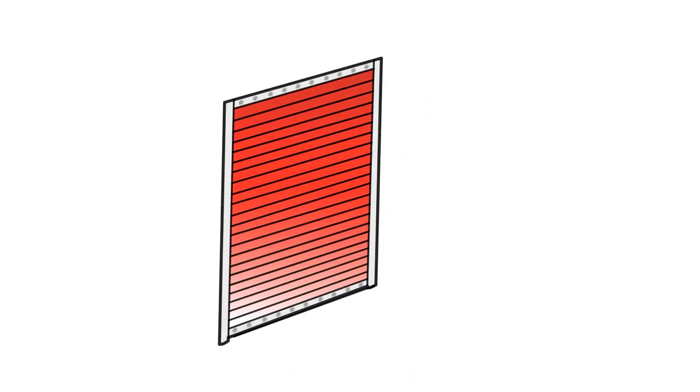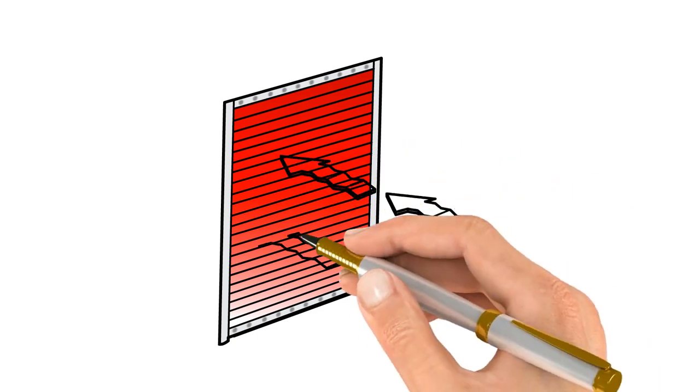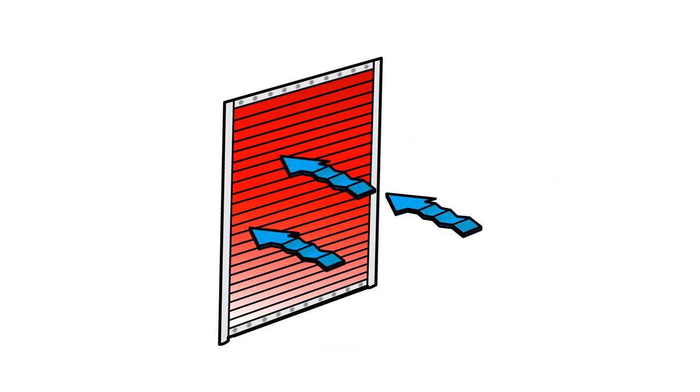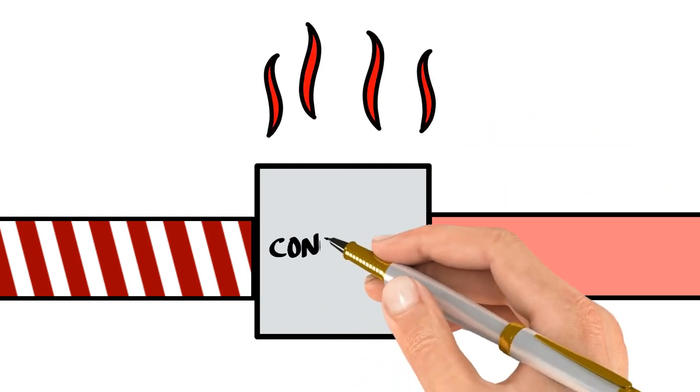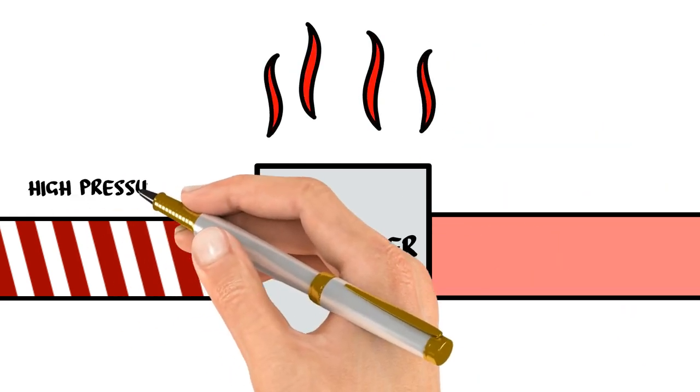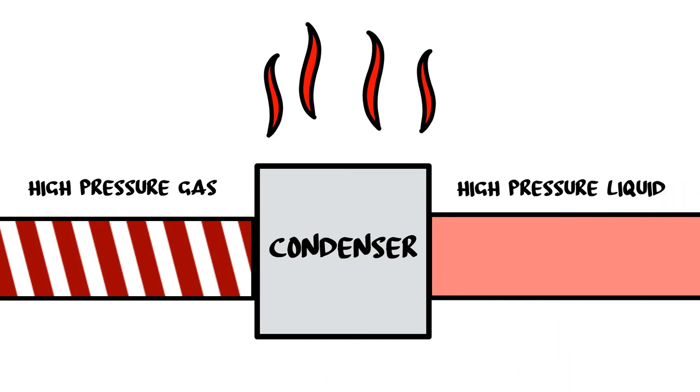In front of the radiator now, you're going to get airflow through that heat exchanger through that condenser. And as the air flows through that heat exchanger, it removes the heat from that refrigerant and condenses it from a high pressure gas into a high pressure liquid.